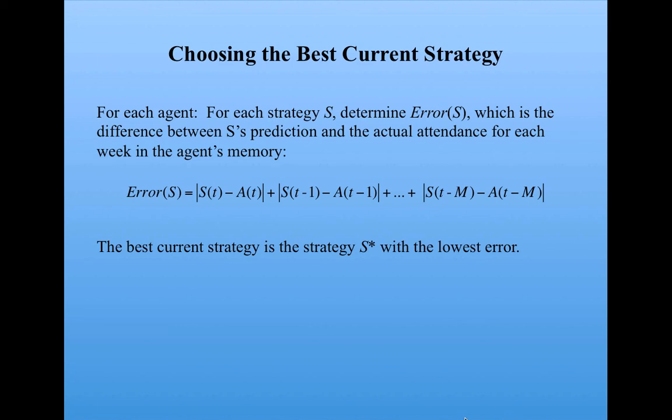Each person is going to determine for each time step between now and M previous time steps what current strategy would have had the least error. The error is the difference at each time step between the prediction made by a strategy and the actual attendance. So this strategy S has a difference between what it predicted this time and the actual attendance, and what it predicted last week minus the actual attendance, and so on, all the way to the memory limit. The best current strategy is the strategy S-star that has this lowest error over all the strategies. So that's how the best strategy is determined.